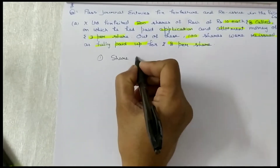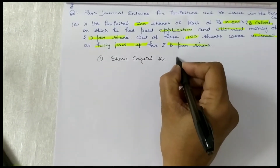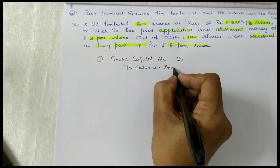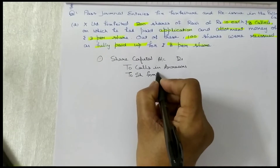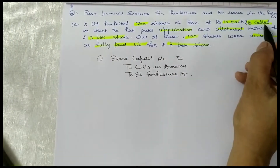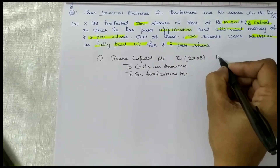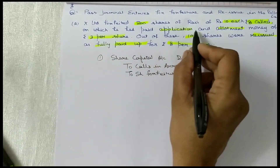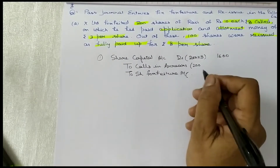For the forfeiture entry: Share capital account is debited, call scenarios are debited, and share forfeiture account is credited. Share capital has been called up at Rs.8, so you have to multiply 200 into 8. Call scenarios are 200 into the unpaid amount, on which he had paid application and allotment money. The amount received is to be shown in share forfeiture account.